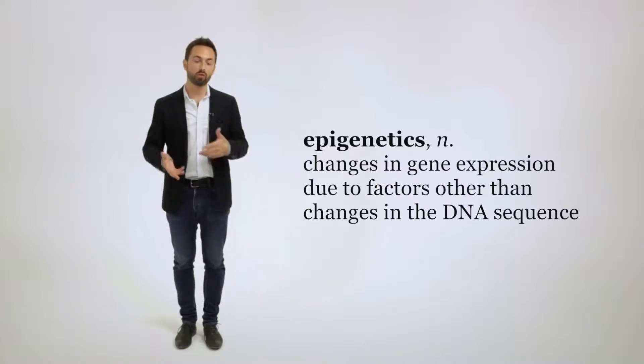For example, it's epigenetics which makes a pancreatic cell capable of producing insulin because that gene is switched on there, but switched off everywhere else.